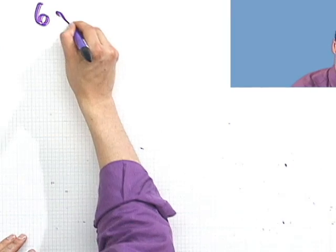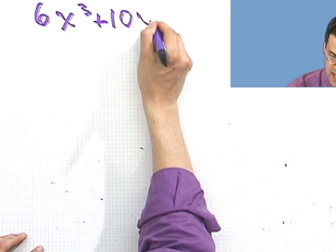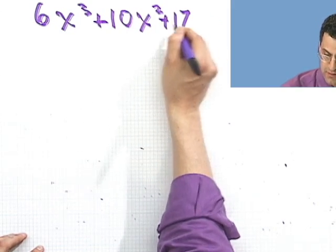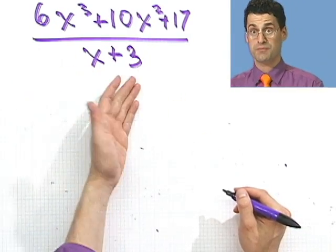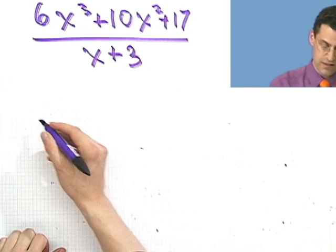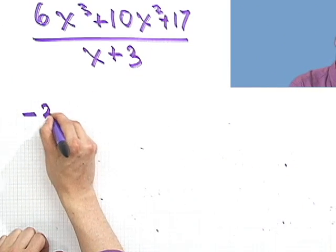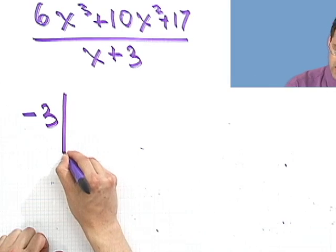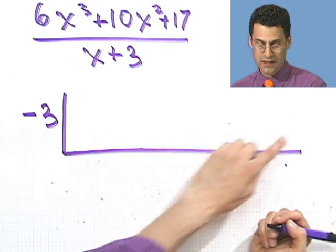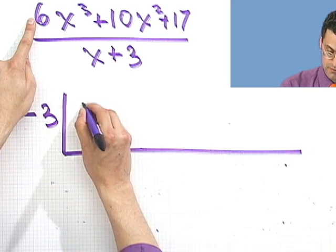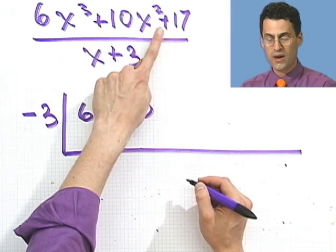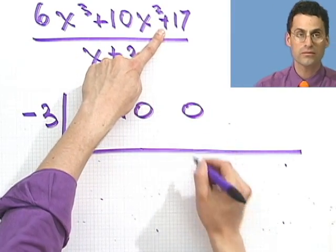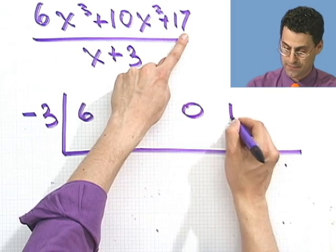Let's try another one. How about 6x cubed plus 10x squared plus 17, divided by x plus 3. The divisor is x plus a number, so I'm okay to use synthetic division. I switch the sign and write minus 3. Draw my little box. Then I copy the coefficients: 6, then 10. Notice there's no x term, so I put a placeholder 0. And then 17.